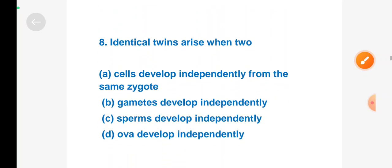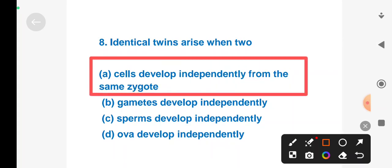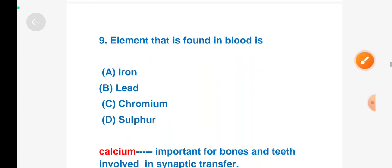Next question: Identical twins arise when - Option A: two cells develop independently from the same zygote, Option B: gametes develop independently, Option C: sperm develop independently, Option D: ova develop independently. Right answer is Option A, two cells develop independently from the same zygote.